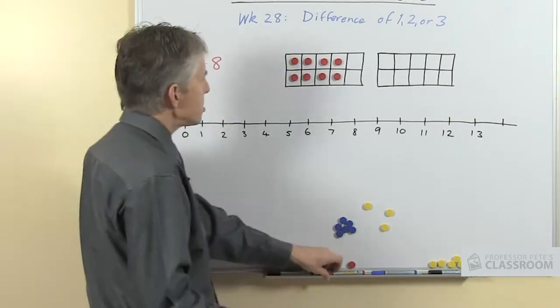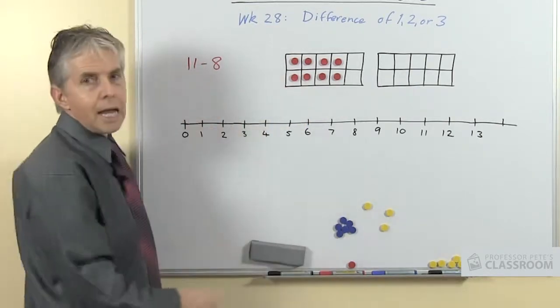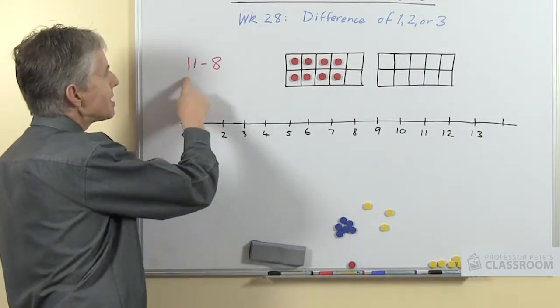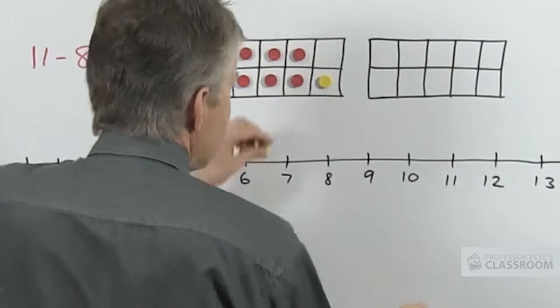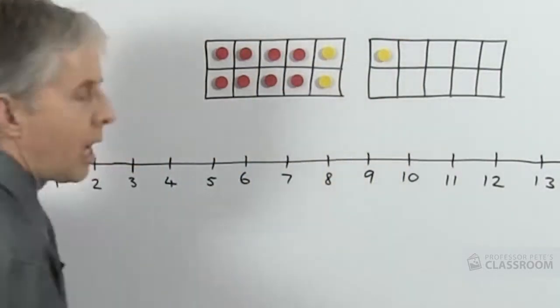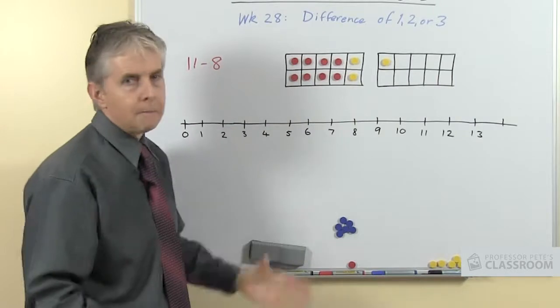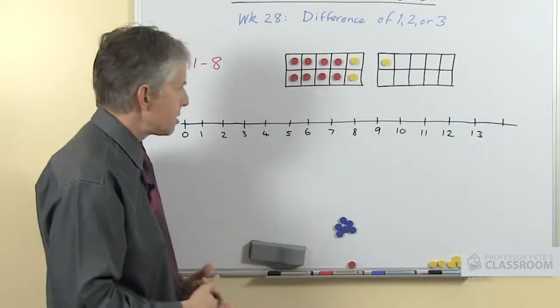So with the 10 frame, one approach to this would be to put out 8 counters and then we're going to see how many more there are in this amount here, this number here, make this up to 11. How many more have we added? We're using the second color and of course we can see it's 3.